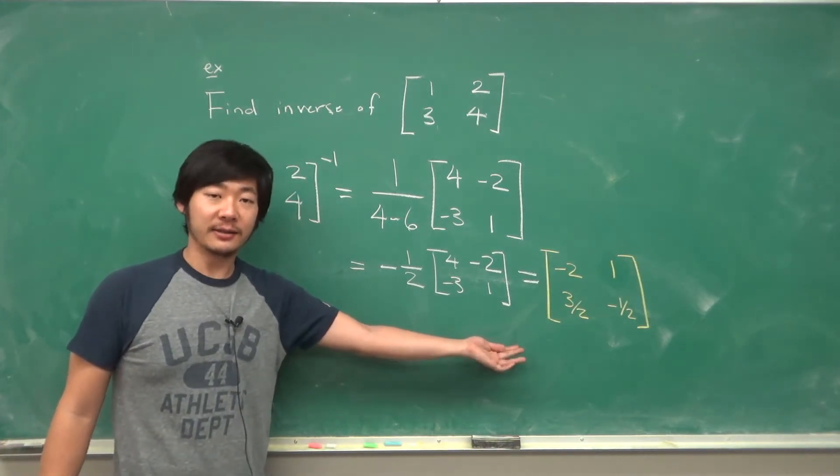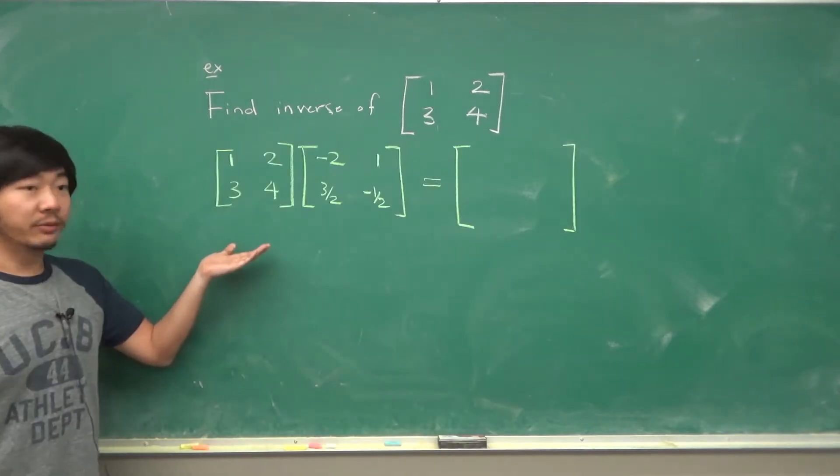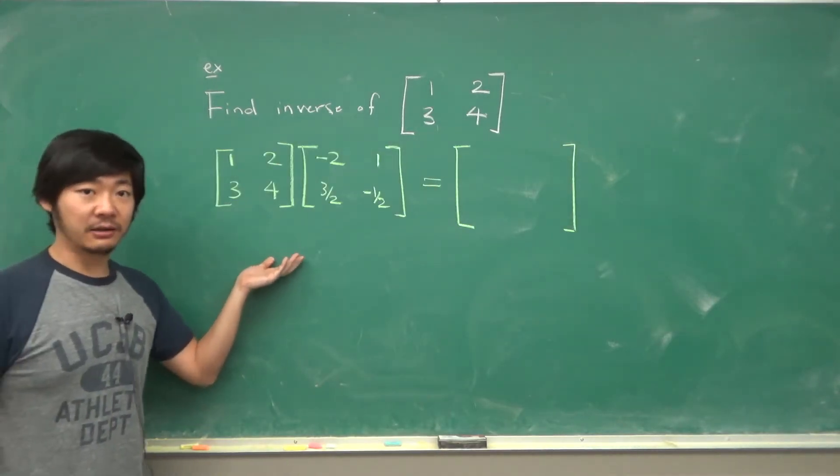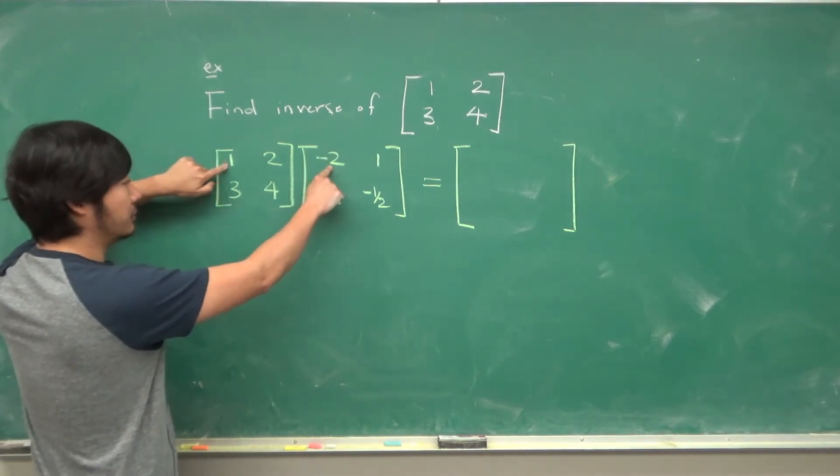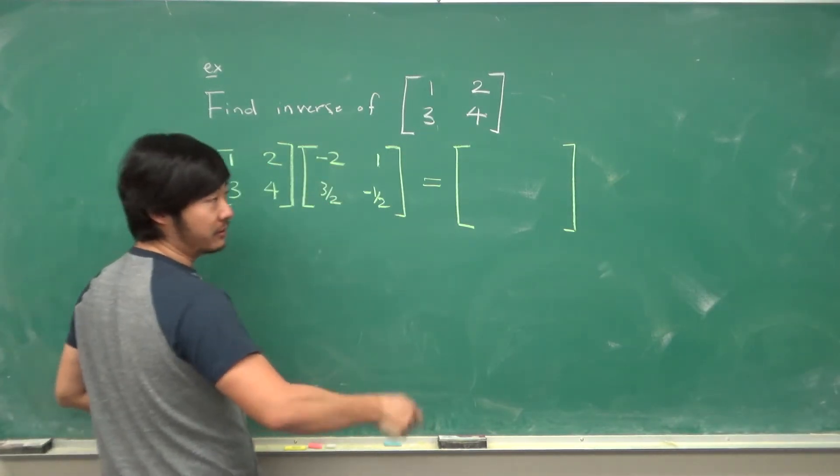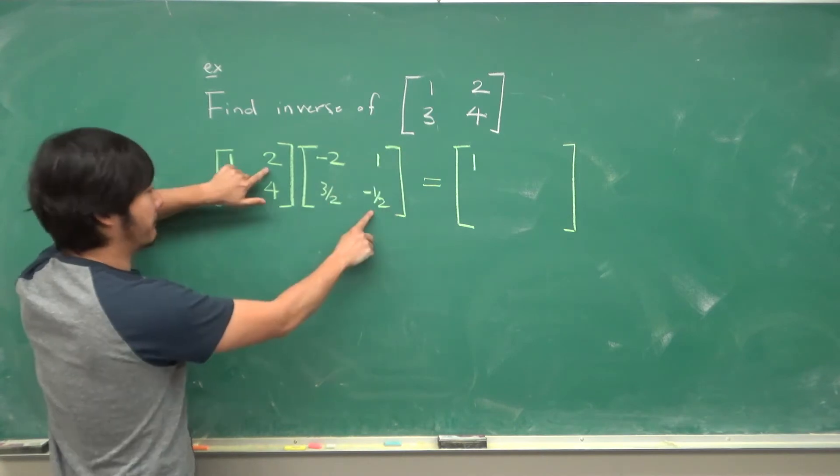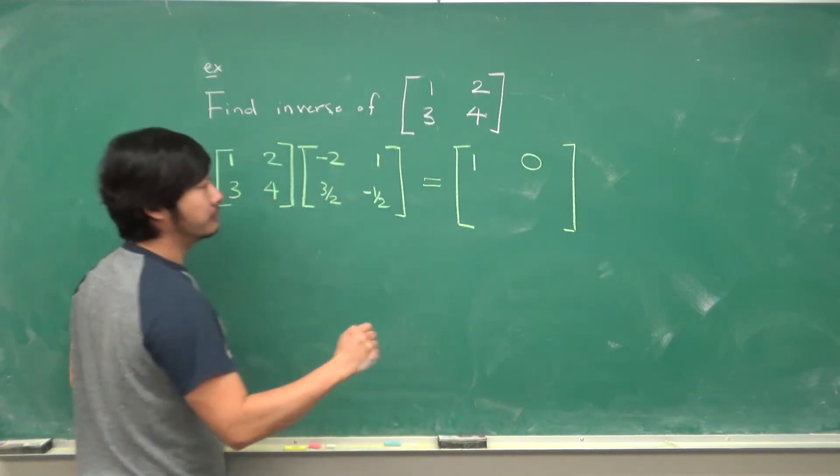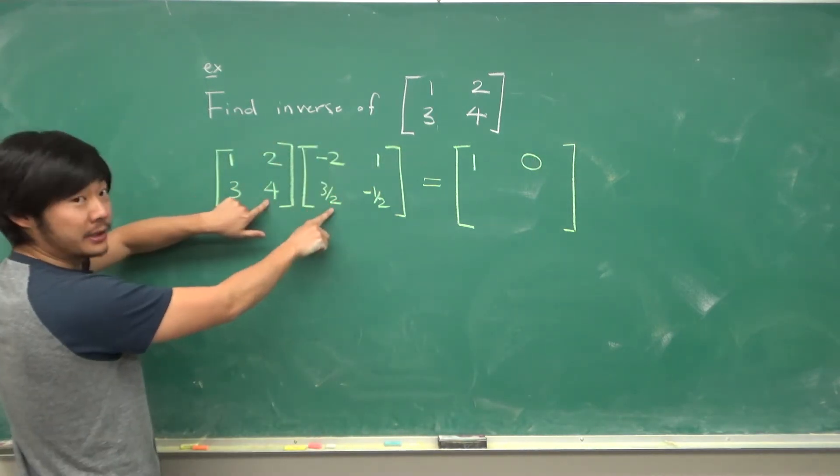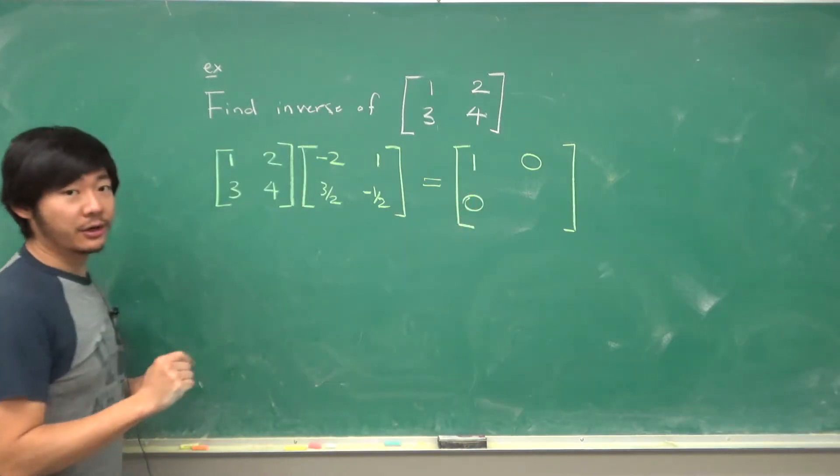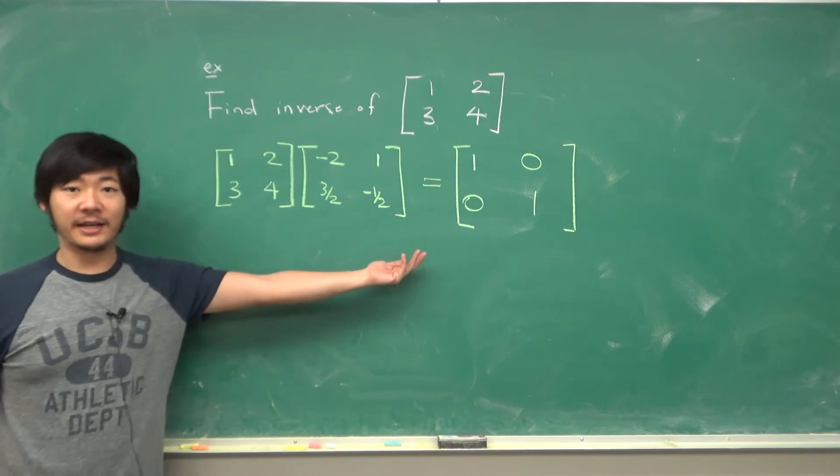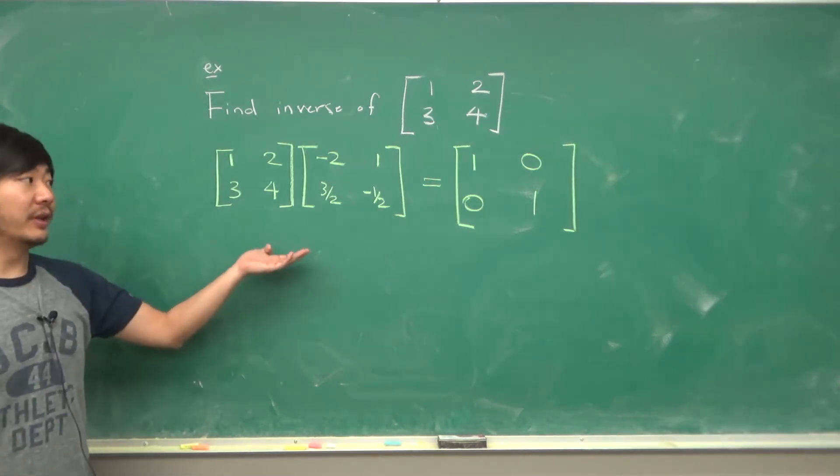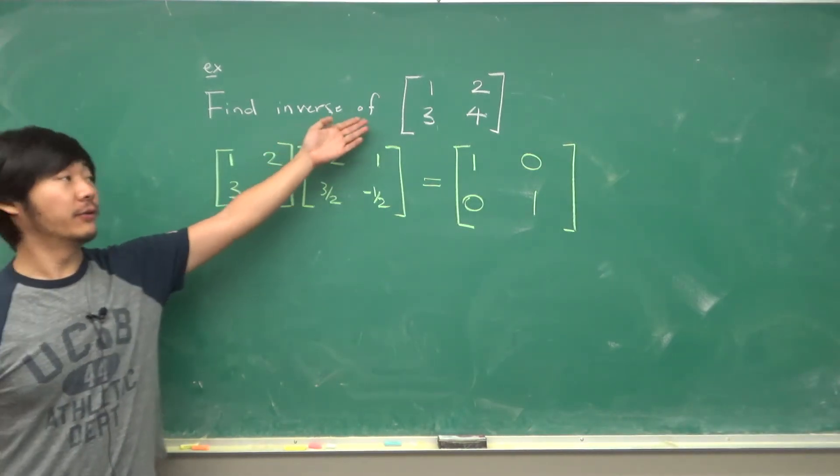Now let's just double check that this is indeed an inverse. So we want to multiply these two matrices out. We do row times column. So negative 2 plus 3 is 1, 1 minus 1 is 0, negative 6 plus 6 is 0, 3 minus 2 is 1. So we get the identity matrix and so this is the inverse of this matrix.